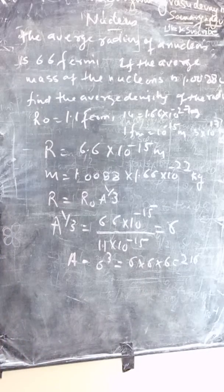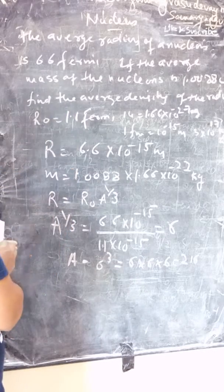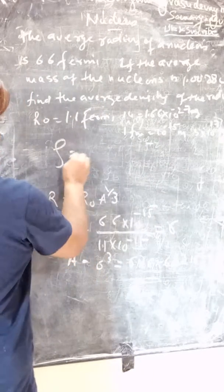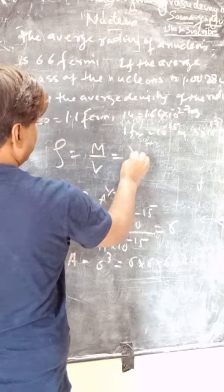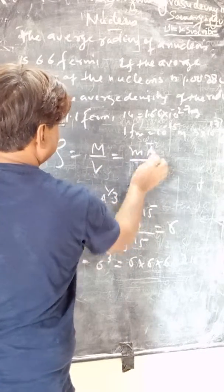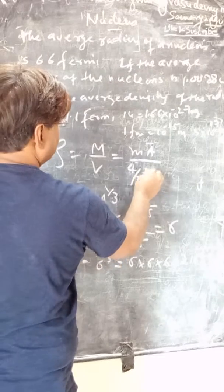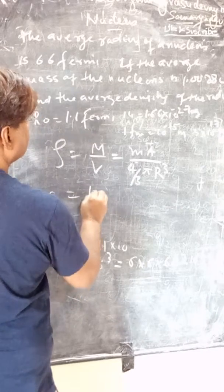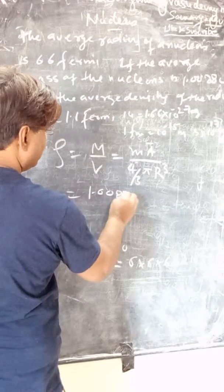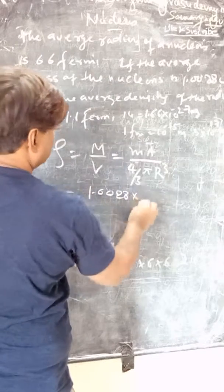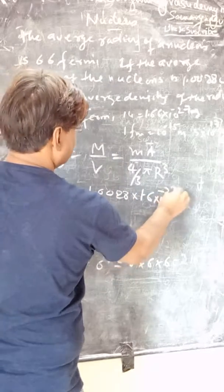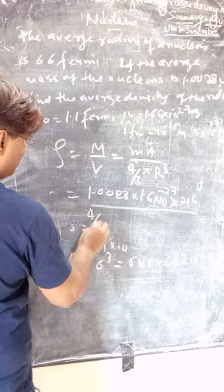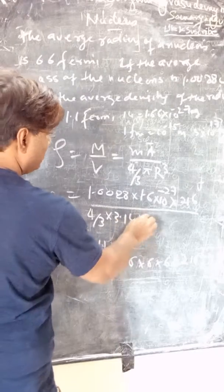Now we have to find the density. Density ρ = mass / volume = m·A / (4/3 · π · r³). Here m = 1.0088 × 1.66 × 10⁻²⁷ kg and A = 216, divided by (4/3) · π (3.14) · r³.